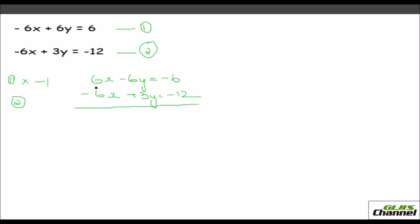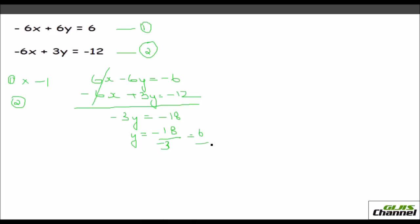Adding both equations, the 6x terms cancel. We're left with minus 3y equals minus 18. So y equals minus 18 over minus 3, which is positive 6.